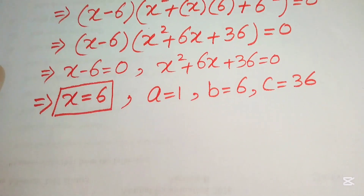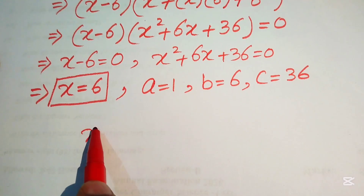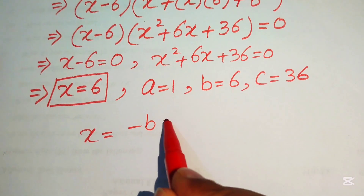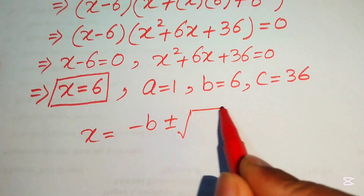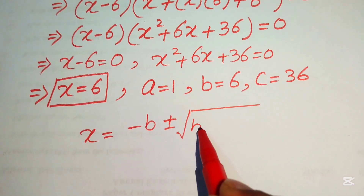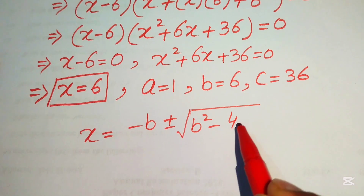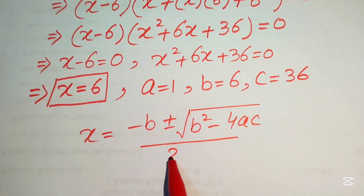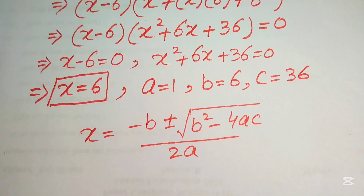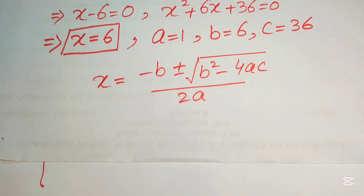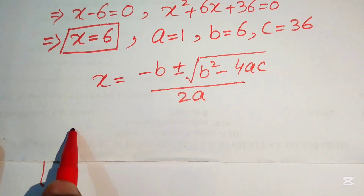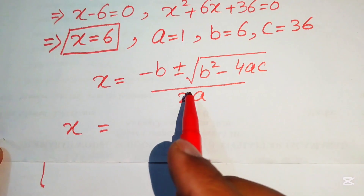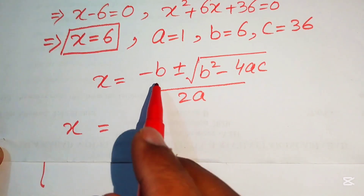We apply the quadratic formula: x equals negative b plus or minus the square root of (b² minus 4ac), all divided by 2a. We substitute the values of a, b, and c.